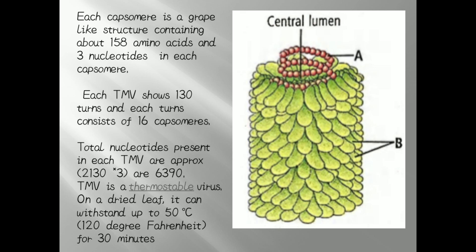Each TMV shows 130 turns and each turn consists of 16 capsomeres. The total nucleotides present in Tobacco Mosaic Virus: 1 capsomere has 3 nucleotides, and total capsomeres are 2,130, so 2,130 multiplied by 3 gives the entire nucleotide count present in Tobacco Mosaic Virus as 6,390. Tobacco Mosaic Virus is thermostable — it can survive at up to 50 degrees Celsius.